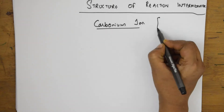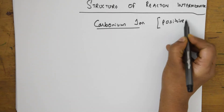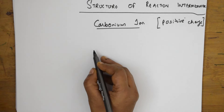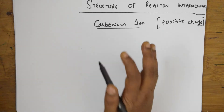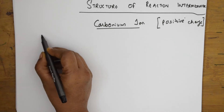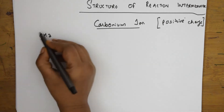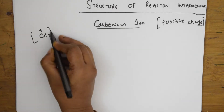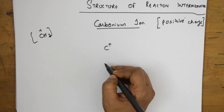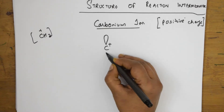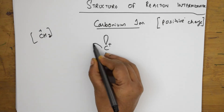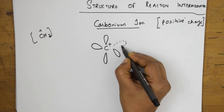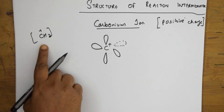Carbonium ion is denoted by a positive charge — it is a positively charged species. Taking the case of CH3+, the structure looks like this: carbon in the center with a positive charge, one lobe above, one lobe below, and two more lobes on the sides.